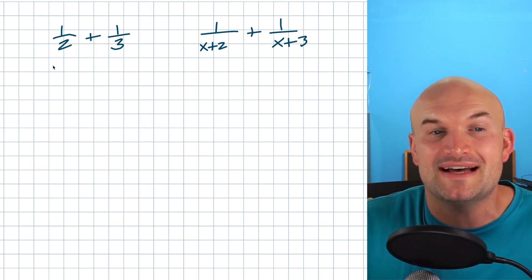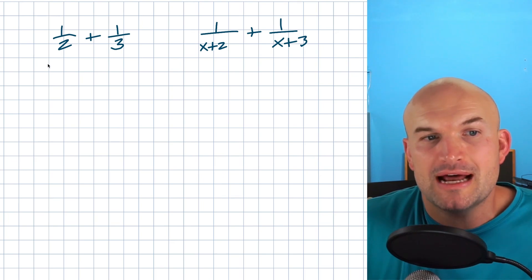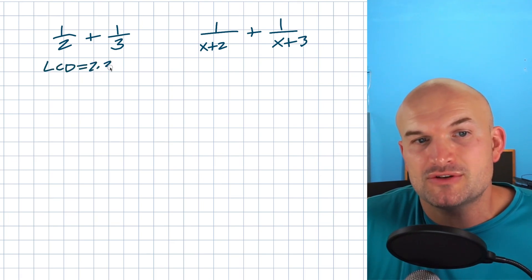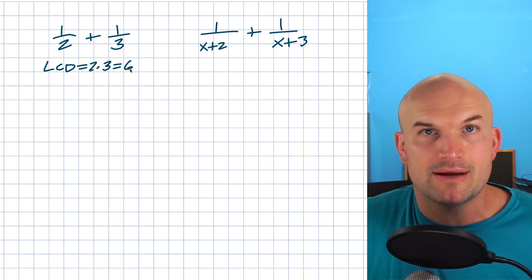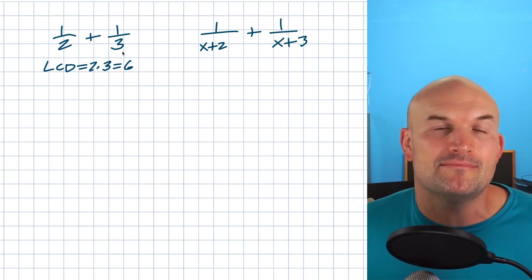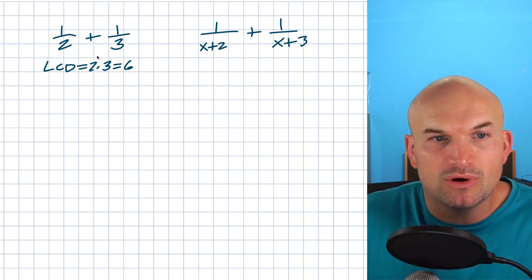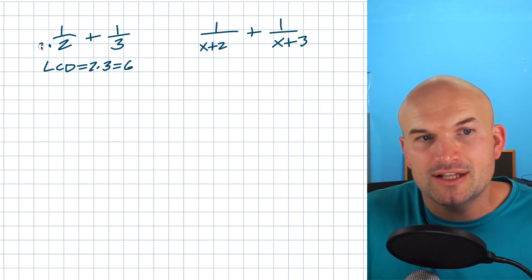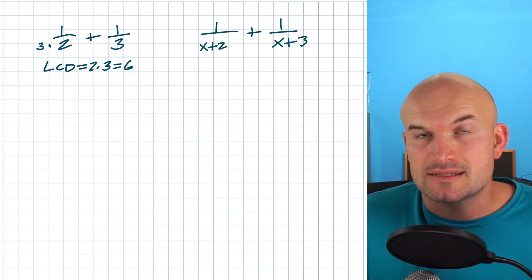The fastest, easiest way to find the common denominator is just to multiply your two denominators. So in this example, my LCD is going to be two times three, which is equal to six. So what I want to try to do is say, how can I get my denominators to be six? Well, since two times three is equal to six, to get on the left-hand side, all I need to do is multiply by three to get six.